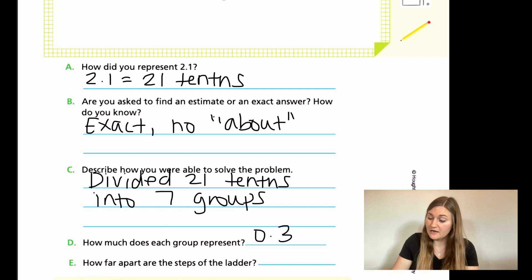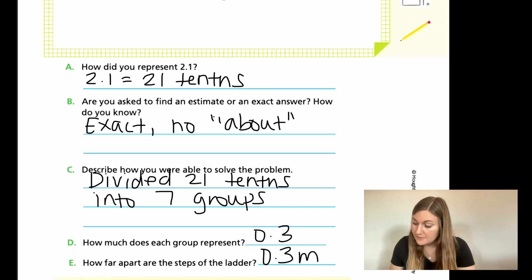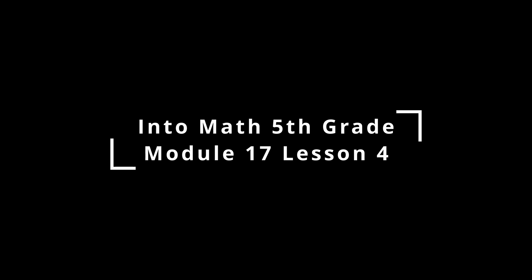So then for my final answer, how far apart are the steps of the ladder? It's going to be 0.3 and then that's going to be meters, M for meters. Go ahead and finish up the rest of your problems on this lesson and I'll see you back for lesson five. Thank you.